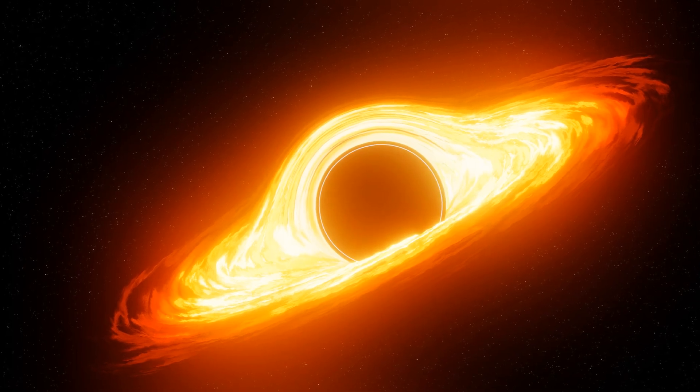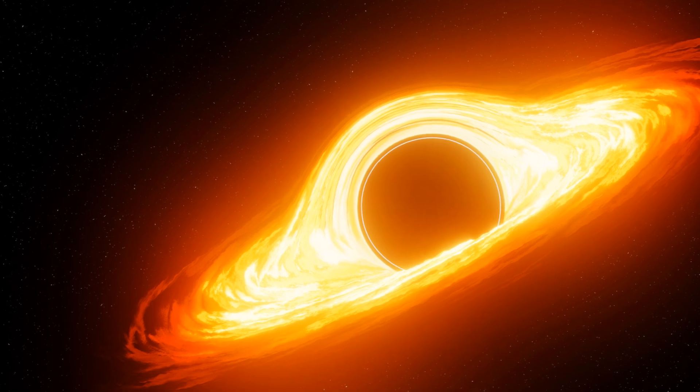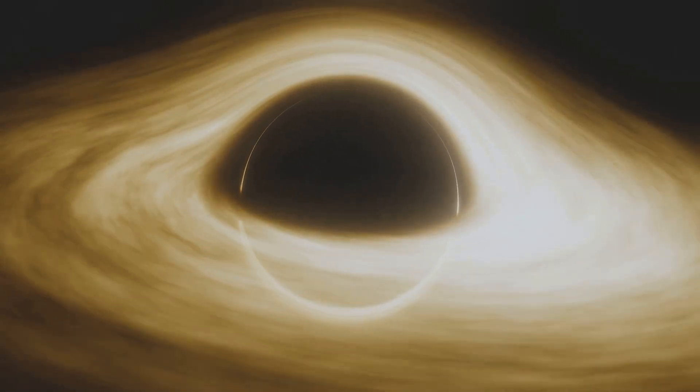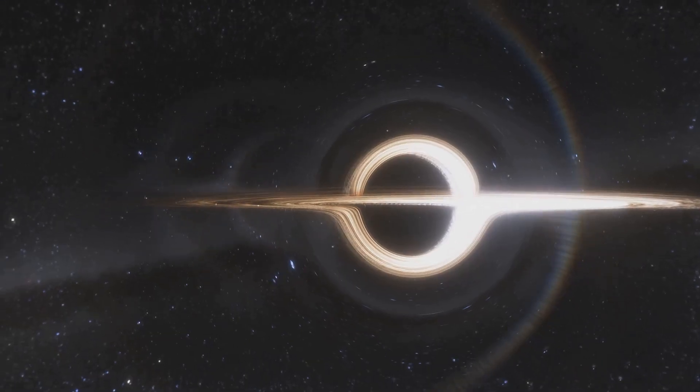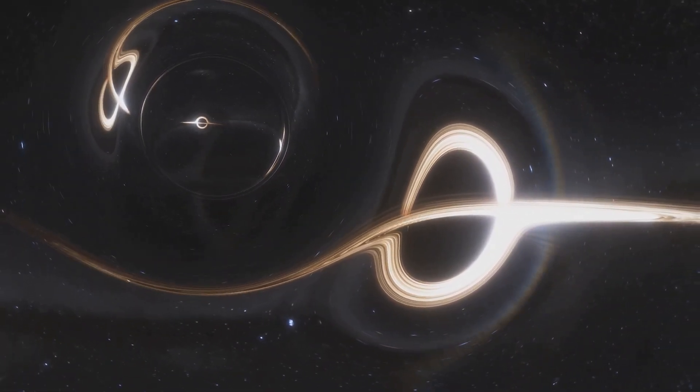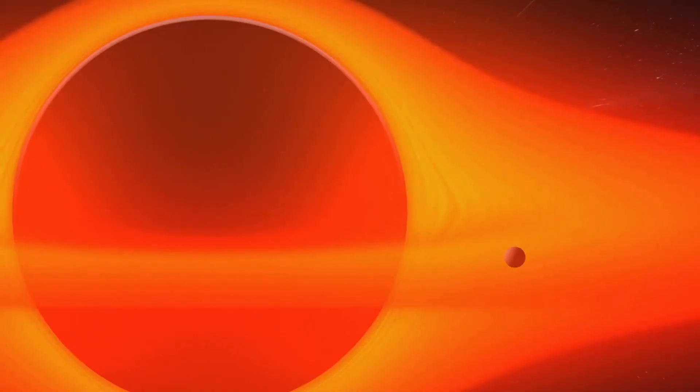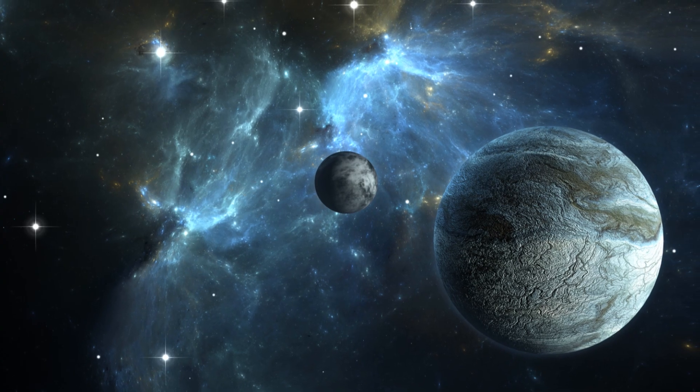But what happens when these cosmic monsters go rogue? Picture a black hole, millions of times the mass of our sun, hurtling through space at velocities of millions of miles per hour. As it passes, it warps space-time around it, pulling stars, planets, and gas into its insatiable maw. And what if one of these rogue black holes were to venture too close to our solar system? The gravitational pull could tear our planetary family apart, flinging us into the cold, dark void, or worse, into the black hole itself.